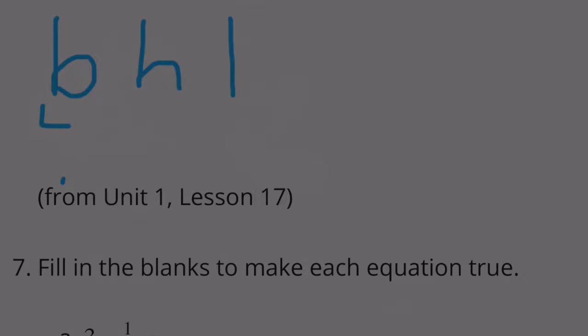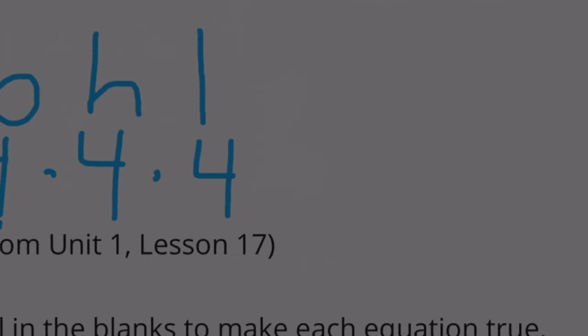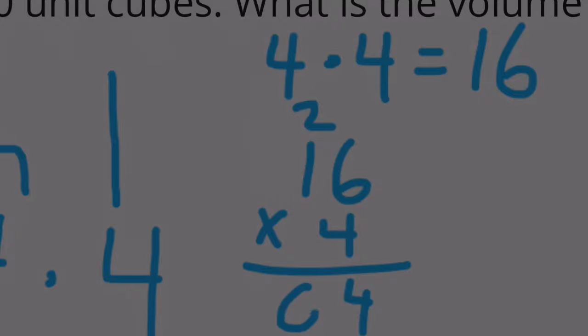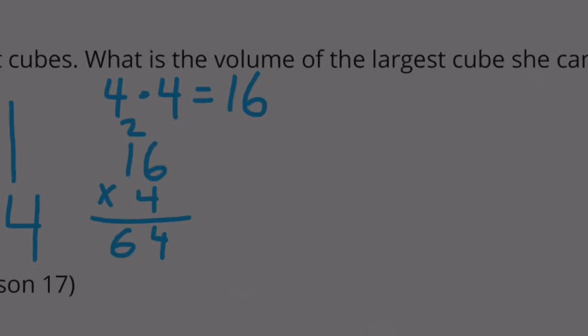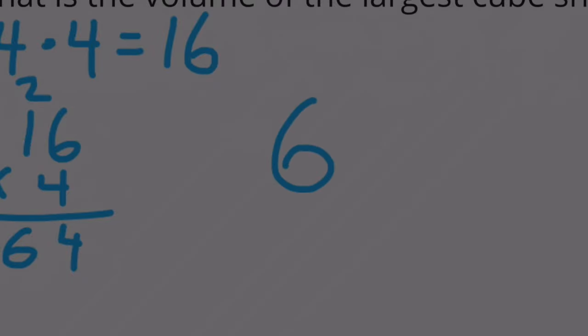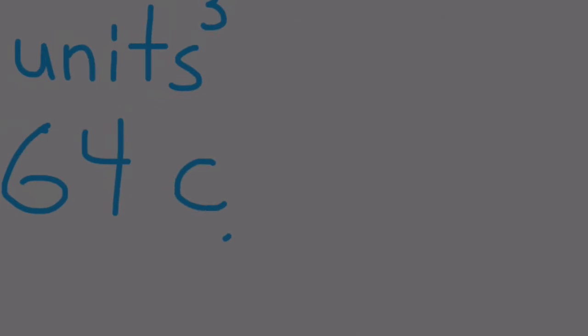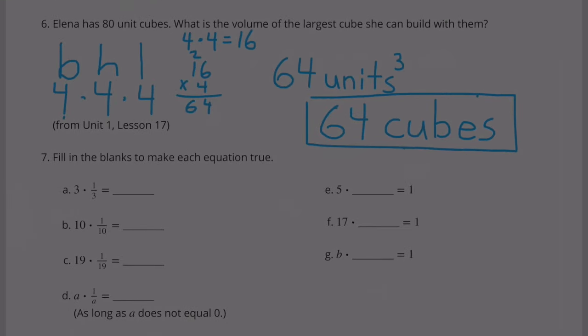Let's try four times four times four. Four times four equals 16, and 16 times four equals 64. I think that the largest volume is 64 units cubed or 64 cubes. 64 cubes is the most that Elena would be able to fit into the volume of a cube. Even though she had 80 cubes, she'd have some left over.